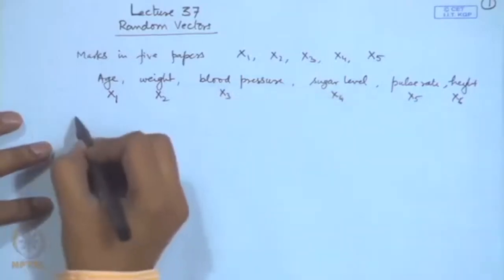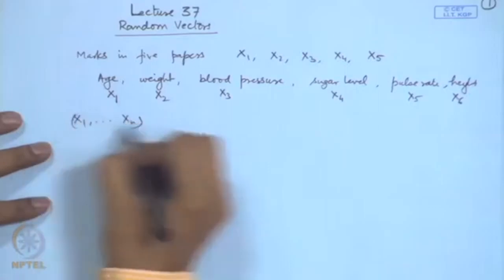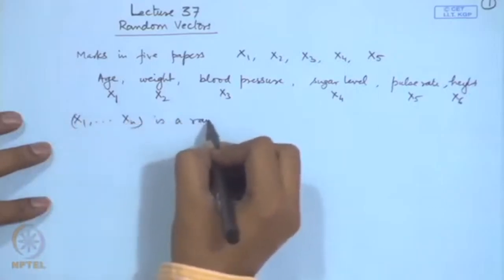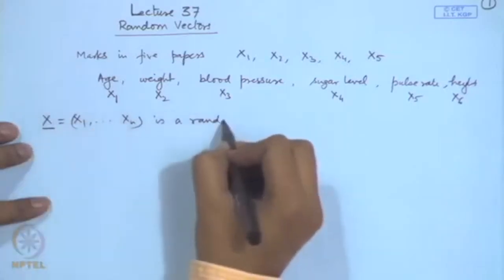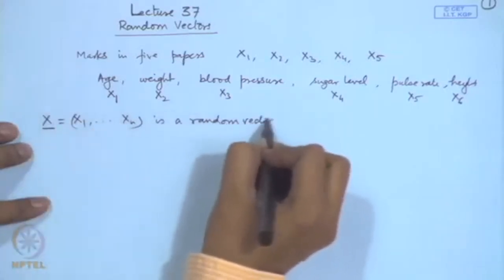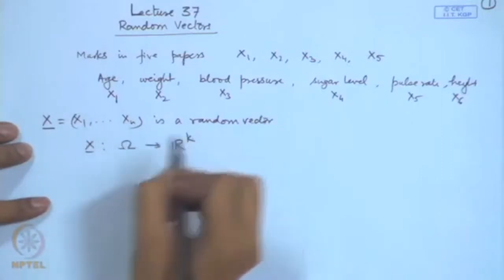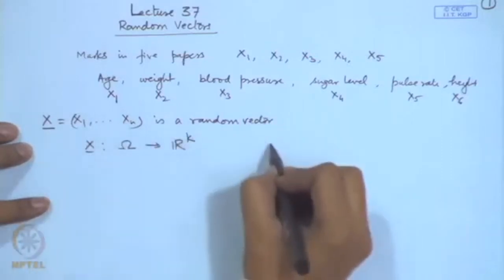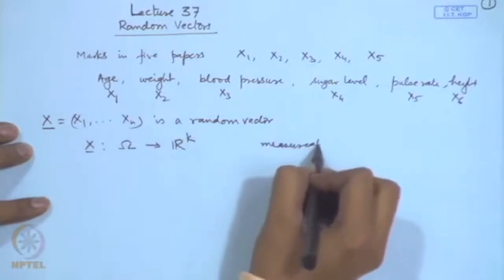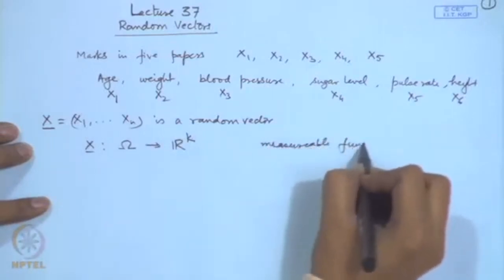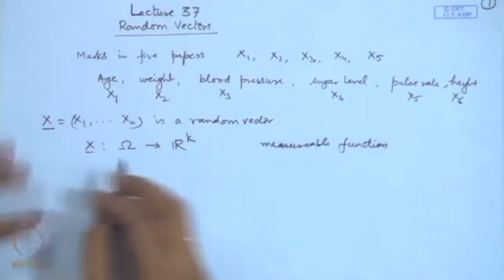In general we say that (x1, x2, ..., xn) is a random vector, denoted by X. Then X is actually a function from Ω into R^k, and we keep the condition that it is a measurable function. Like in the case of a random variable, we may have a discrete or continuous random vector, or various mixed types.